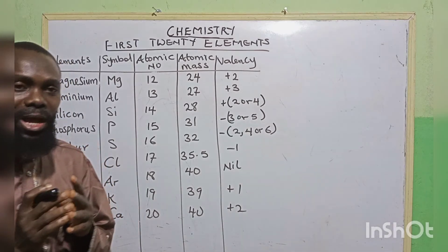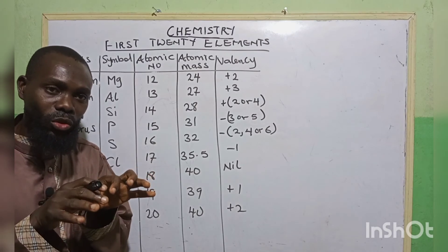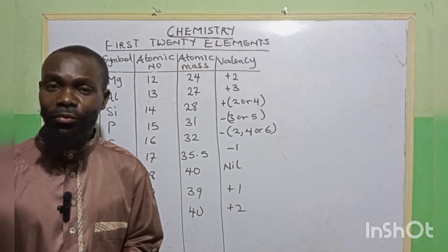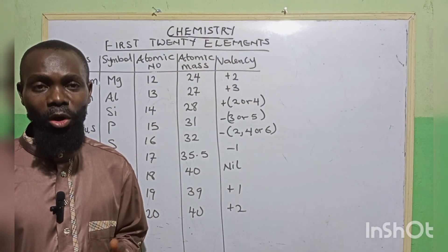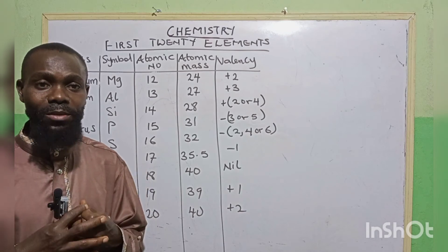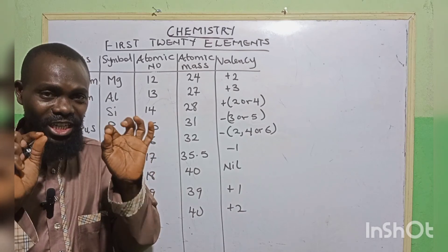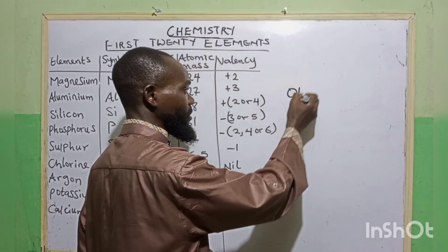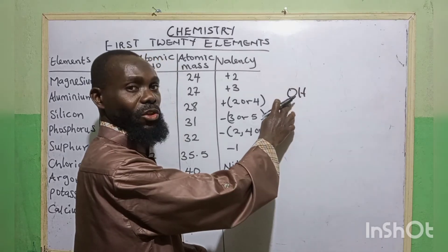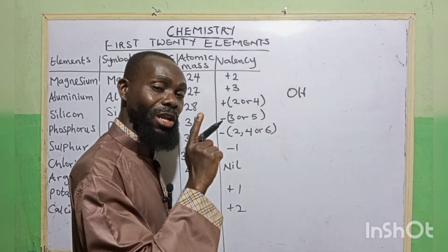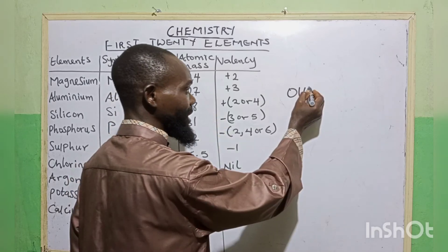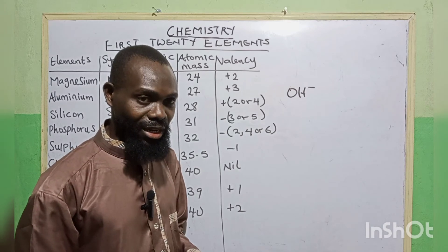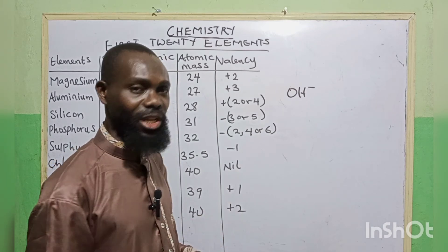There are some ions that combine together to form what is called a radical. A radical is formed when one or more ions combine together to have a unique valency. For instance, when we have OH — oxygen combined with hydrogen — they have a common valency which is negative one. This is called the hydroxide ion.